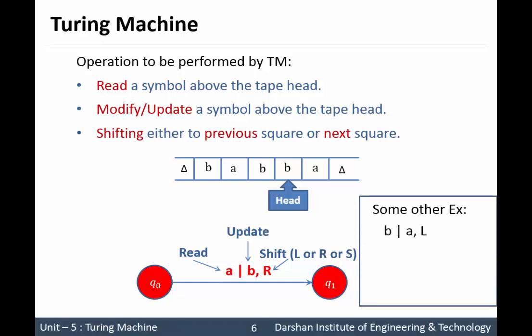Let us see another example: B slash A comma L means read B on the tape, update B by A, and move to the left direction. Similarly, A slash delta comma R means read A on the tape, replace A by delta, and move to the right direction.